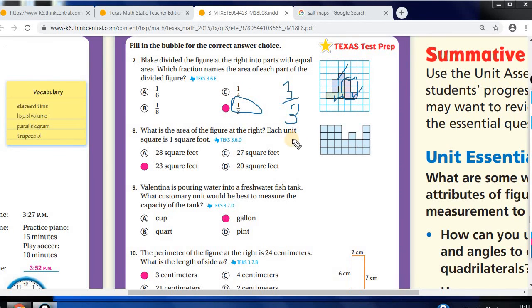The next one, what is the area of the figure at the right? And each one is a square unit. You just count each one. Count each square unit. And you have 23 total there.